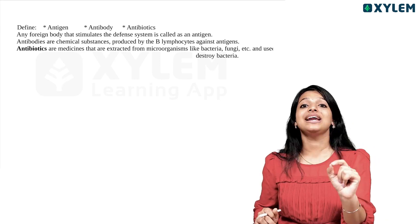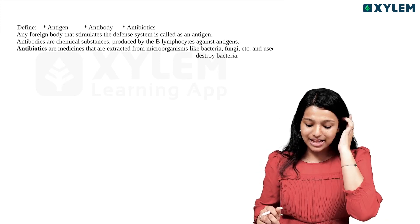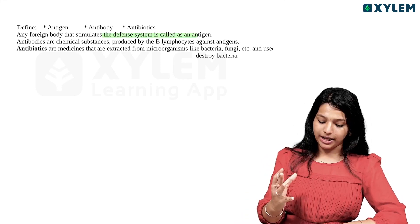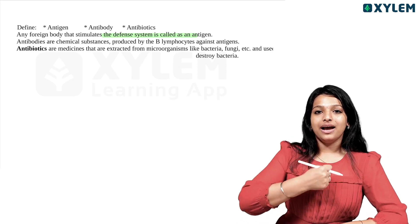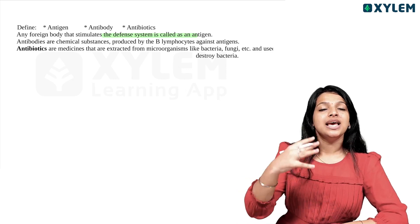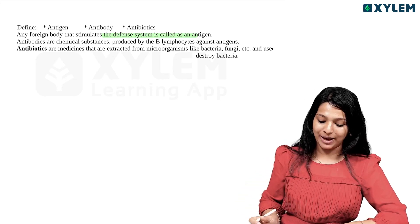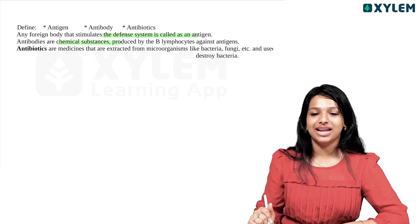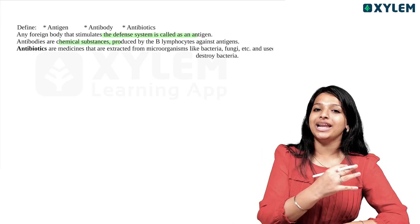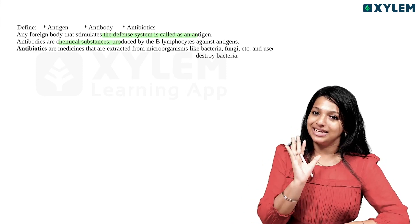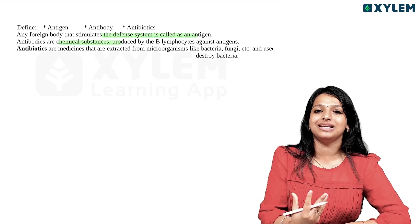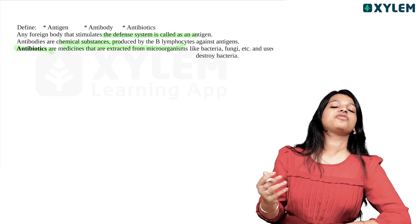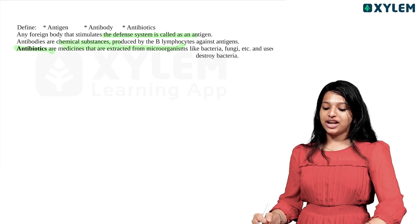Let's define antigen, antibody, and antibiotics. Any foreign body that stimulates the immune system is called an antigen. Antibodies are chemical substances produced by B lymphocytes against antigens. Antibiotics are medicines extracted from microorganisms like bacteria and fungi, and are used to destroy bacteria.